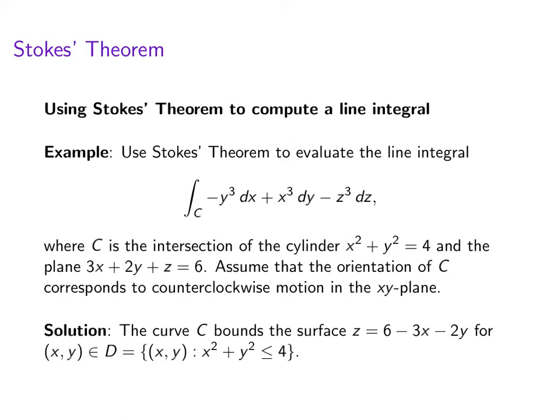Alright, so our curve C bounds the surface z equals 6 minus 3x minus 2y. It actually bounds lots of surfaces, but that's a pretty simple surface that it bounds.